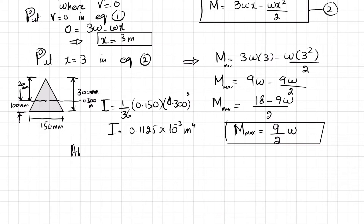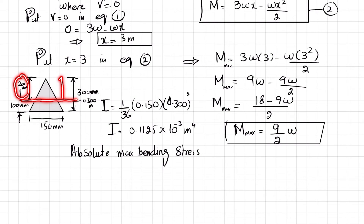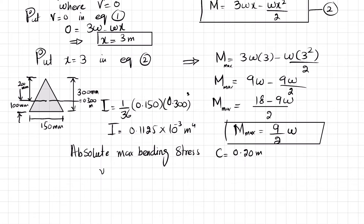For absolute maximum bending stress, we need the maximum distance c from the neutral axis. The distance from the neutral axis to the apex is 200 mm, which is greater than the 100 mm to the base, so c equals 200 mm equals 0.20 m. This gives the maximum absolute bending stress.